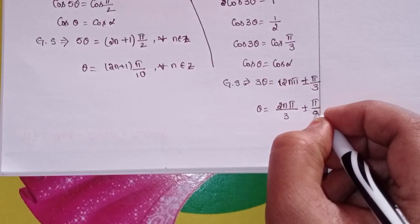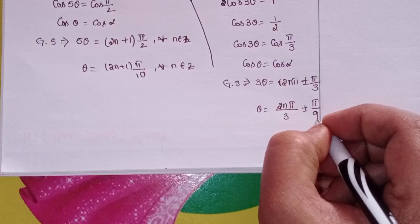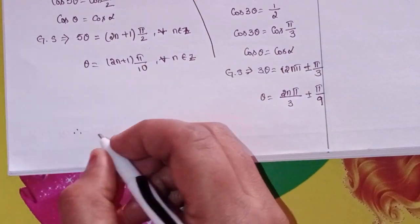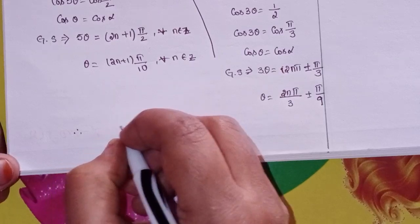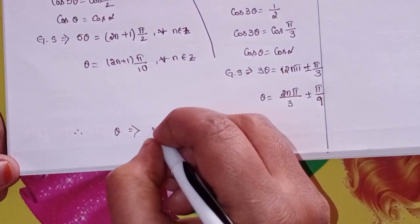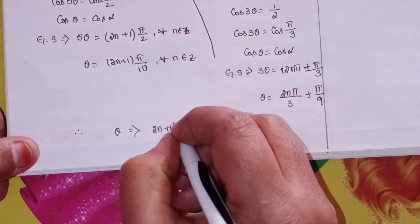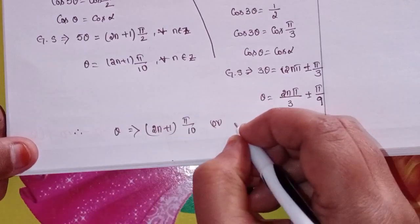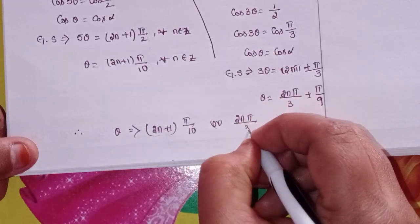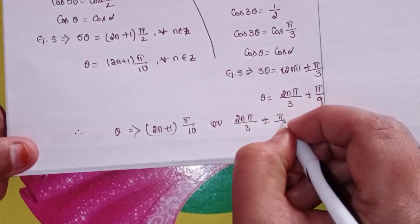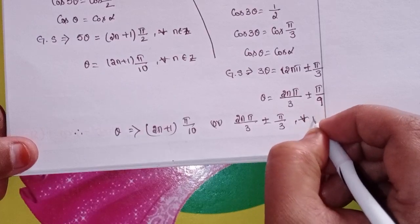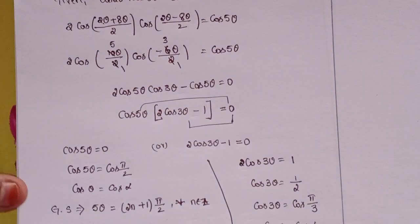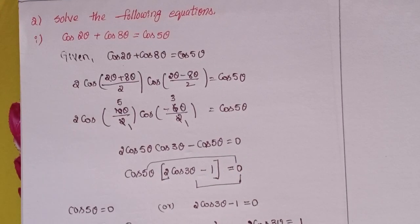Therefore θ = 2nπ/3 ± π/9. So the solutions are θ = (2n+1)·π/10 or θ = 2nπ/3 ± π/9, for all n belonging to Z. This is the first solution. Next, second one.